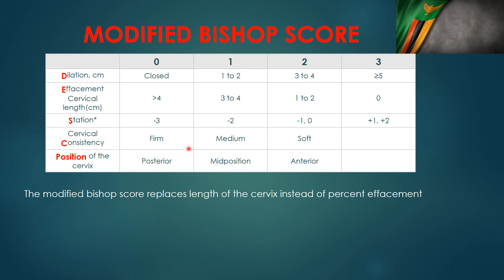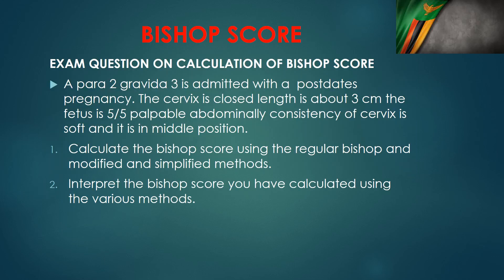A score above seven is a good Bishop score. Below seven is a poor score, and you may need cervical ripening. A score below three means you are unlikely to be successful inducing labor. Thank you so much for listening — you can attempt the question using this modified Bishop score in the next video.